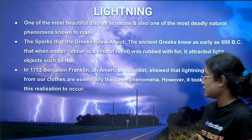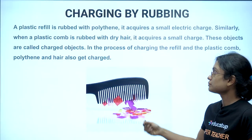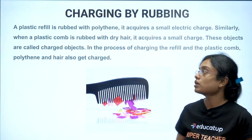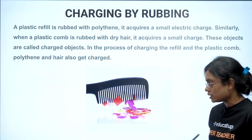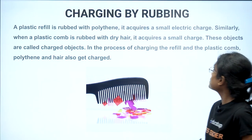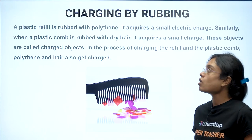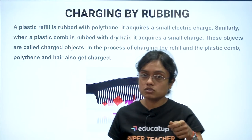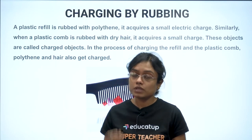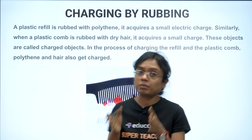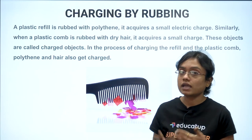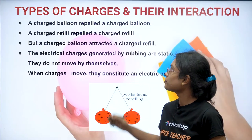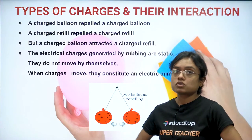Now, charging by rubbing — how charges are acquired on an object because of rubbing. A plastic refill rubbed with polythene acquires a small electric charge. Similarly, when a plastic comb is rubbed with dry hair, it acquires a small charge. If you bring your comb near small bits of paper, the bits of paper will be attracted because the comb acquired charge by rubbing against the dry hair.